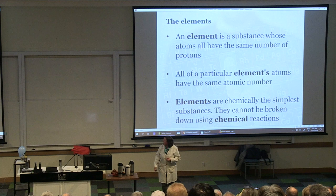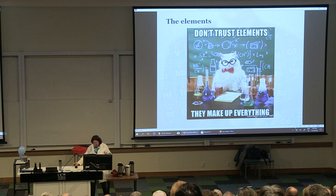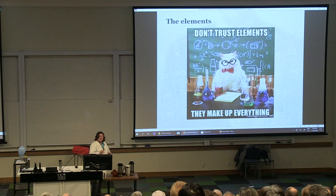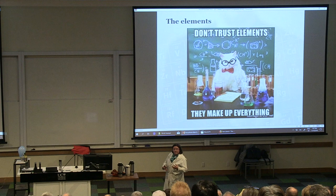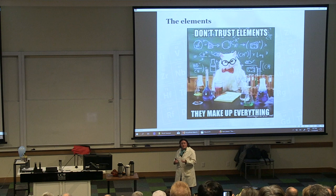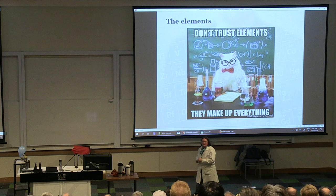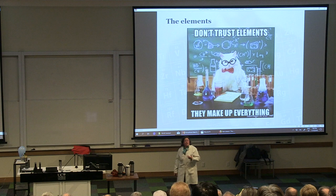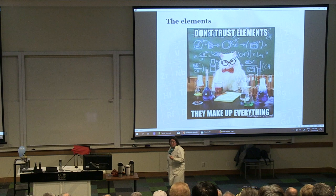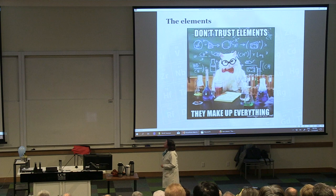As Chemistry Cat says, we don't trust the elements because they make everything up. Quite literally, they're all around us. When we breathe, we breathe in nitrogen and oxygen. Nitrogen is the greater proportion in the air — about 78%. The oxygen is only about 20%. When we breathe out, we're breathing out quite a lot of nitrogen as well, some oxygen, and also carbon dioxide — which is not in elemental form, it's a molecule. That's the chemical reaction that's happened inside our body.